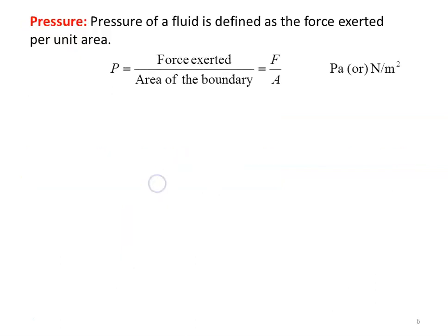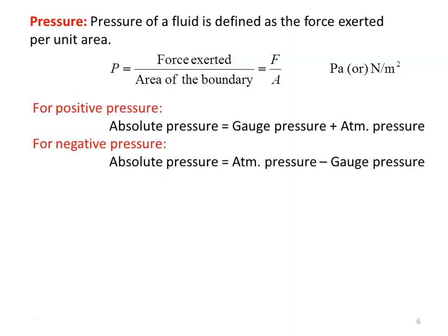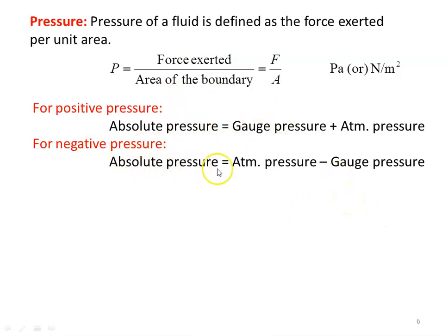Pressure is defined as the force exerted per unit area, in Newtons per meter square or Pascal. We have two types of pressure: positive pressure and negative pressure. Positive pressure is pressure above atmospheric pressure. Negative pressure is pressure below atmospheric pressure. Absolute pressure for positive pressure is the sum of gauge pressure and atmospheric pressure. Gauge pressure is the pressure indicated by any pressure gauge with reference to atmospheric pressure, whereas for absolute pressure the reference is zero pressure. For negative pressure, absolute pressure equals atmospheric pressure minus gauge pressure.